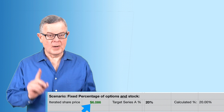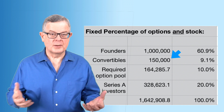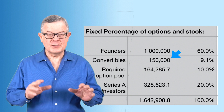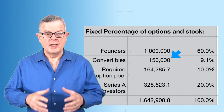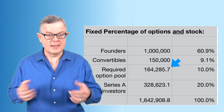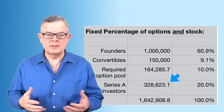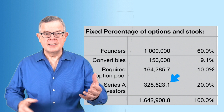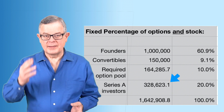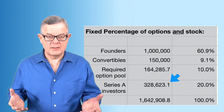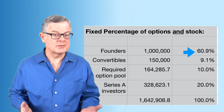Now with the correct price, we build the updated cap table. Founders still have one million shares. The convertibles remain at 150,000 shares — their pre-money cap still beats even the discounted new lower Series A price. The required option pool is 10 percent of the 1.64 million total, about 164,000 shares. The Series A investors now get 328,600 shares — two million divided by the new lower price of $6.086. The percentages now work out correctly.